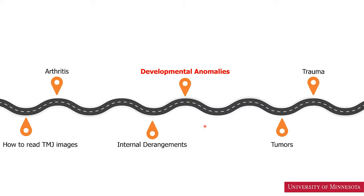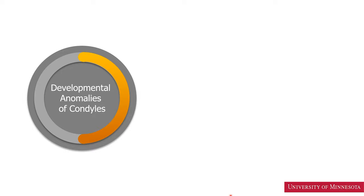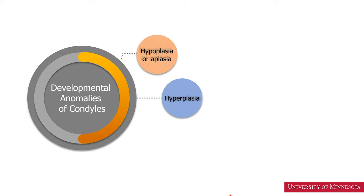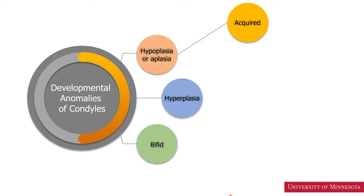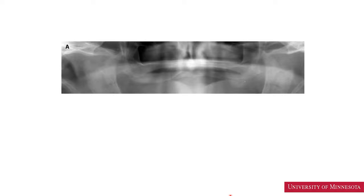We have crossed another milestone. Now we are going to learn about developmental anomalies of the temporomandibular joints. There are several types of developmental problems of the condyles. The first is hypoplasia or aplasia of the condylar head — smaller condyle or absence of the condyle. There could be hyperplasia or large condylar head, and another is bifid condyle. The hypoplasia or aplasia of the condyle could be acquired, developed later in life, or could be congenital.